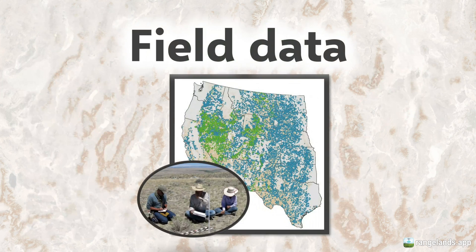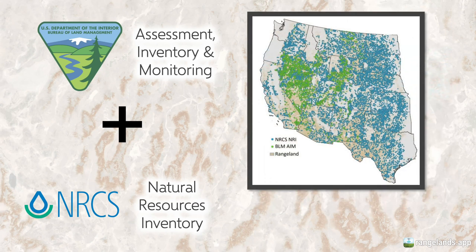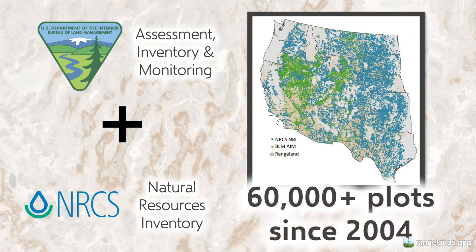Our field data come from two sources: the Bureau of Land Management's Assessment Inventory and Monitoring Program, and the Natural Resources Conservation Service's National Resources Inventory Dataset. Collectively, these two programs go back to 2004, and in that time they've collected more than 60,000 plots that can tell us about the types of vegetation on the ground in those locations.